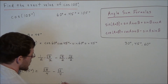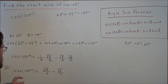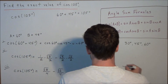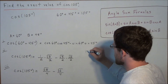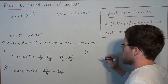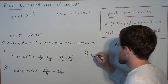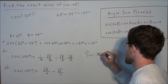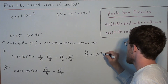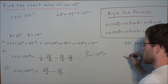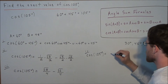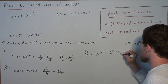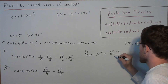So if you want to simplify this onto one expression, we have that the cosine of 105 degrees is equal to the square root of 2 minus the square root of 6, divided by 4.